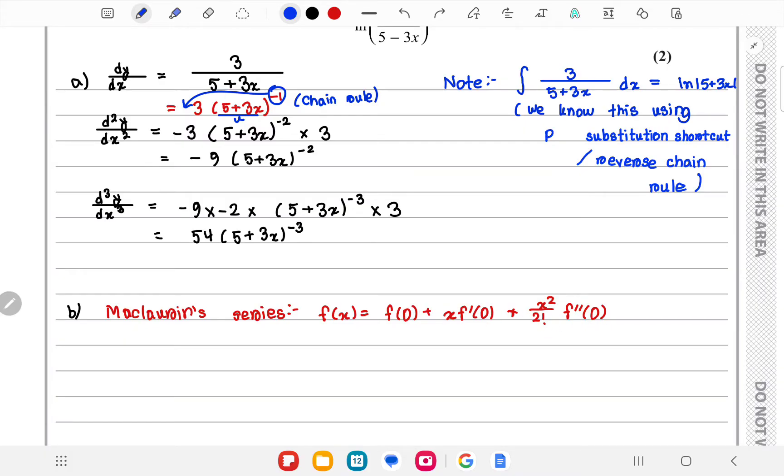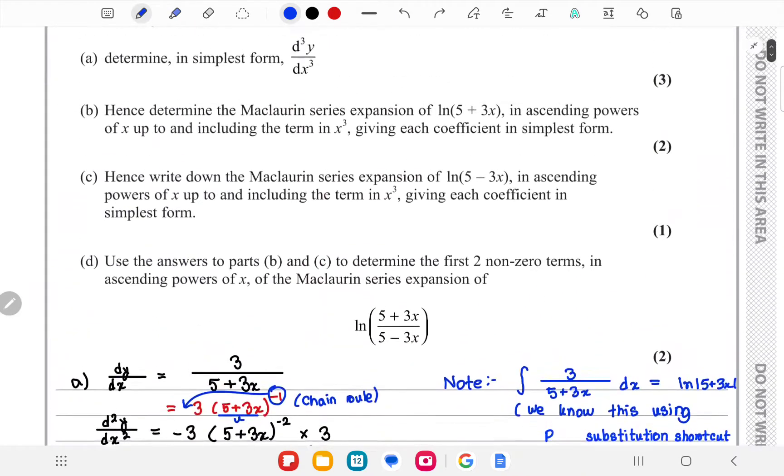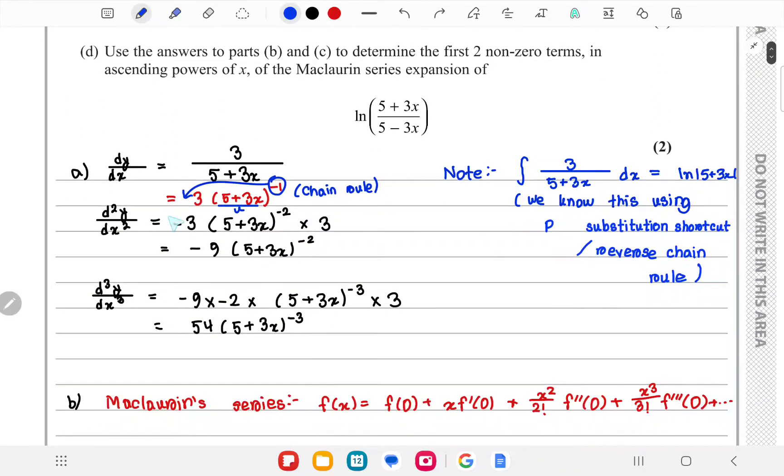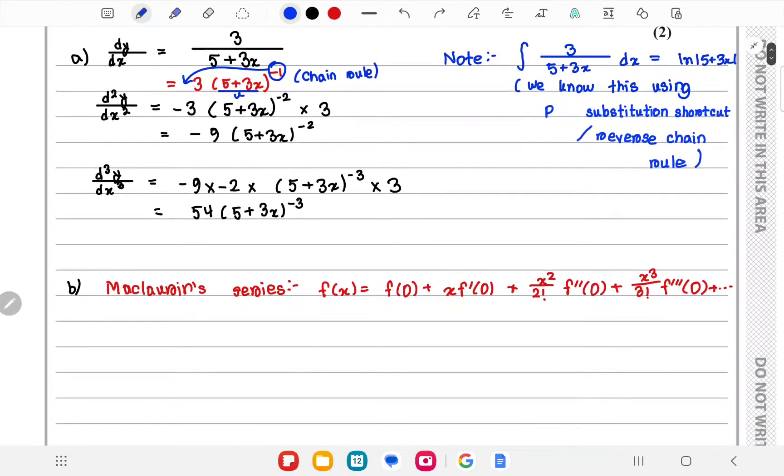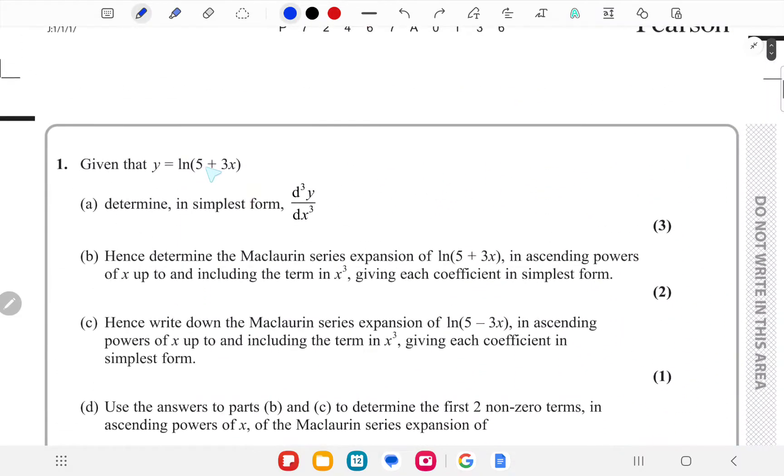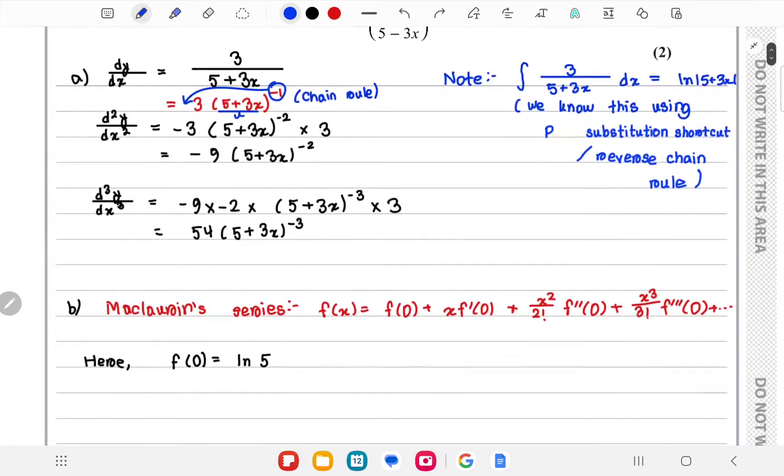It goes like this. So we already have the equations of y, dy/dx, d²y/dx², and d³y/dx³. Basically, we'd need to find f(0). f(0) would be found by putting 0 in this place, so basically ln(5+0), so this would be ln 5.